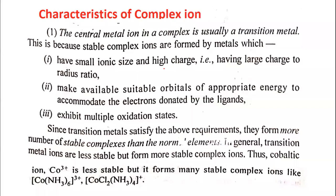For example, the transition metal Cu2+ forms the complex [Cu(NH3)4]2+. In many complexes, the transition metal is present. Without a transition metal, generally a complex cannot be formed. Most of the transition metal ions are usually forming the complexes or complex ions.